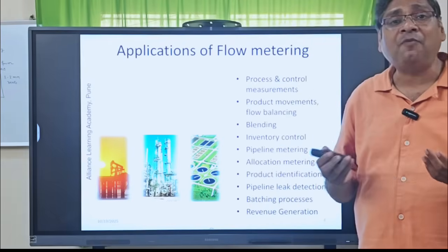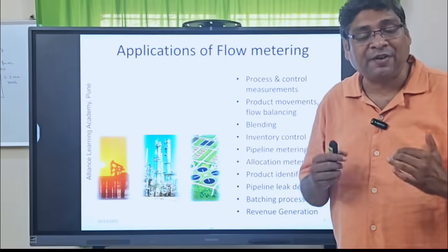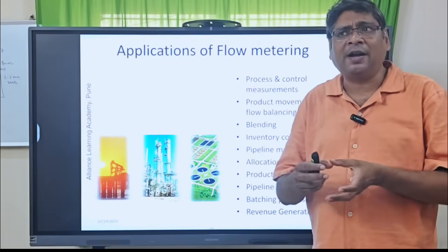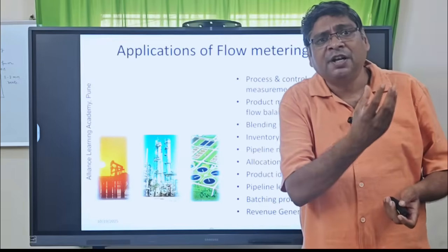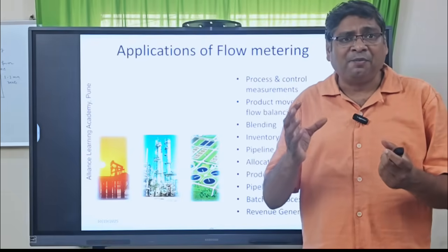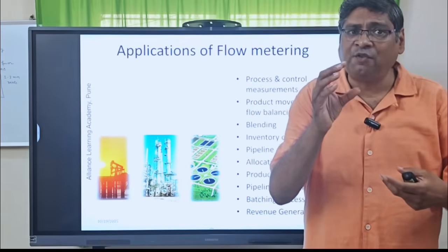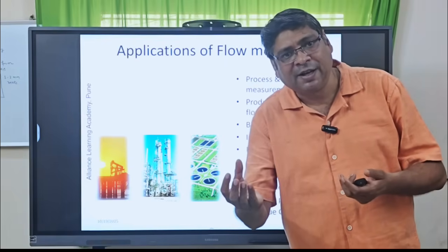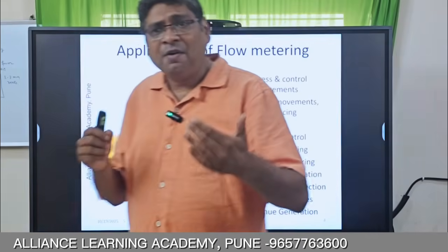Allocation metering is very important nowadays when we talk about energy efficiency and productivity. Depending on the process, we calculate how much fluid, gas, or steam is required for a particular process. In residential societies, depending on population, they calculate how many liters of water are required. At the inlet, there is a flow meter, a small RTU or PLC, and a control valve. Once sufficient water has flowed as per the calculation, the valve closes. This is called allocation metering.